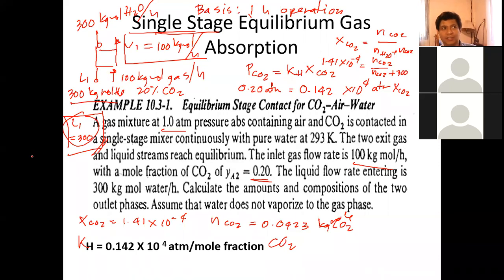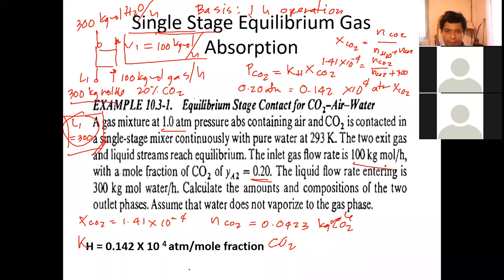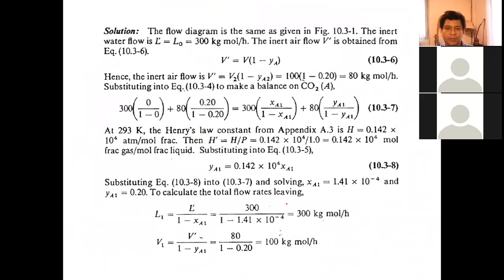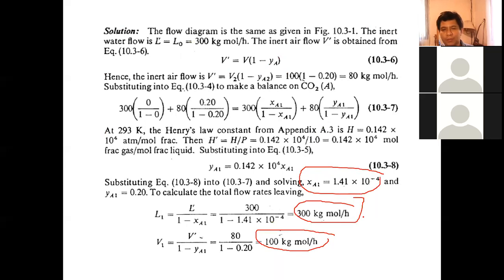That is the consequence of a single stage — only a very small amount of gas is absorbed into the water. To improve efficiency, you can replace the solvent with sodium hydroxide, which is more efficient, or increase the number of stages.